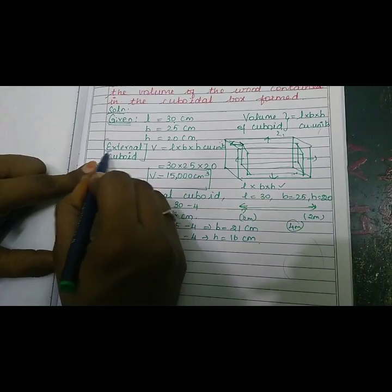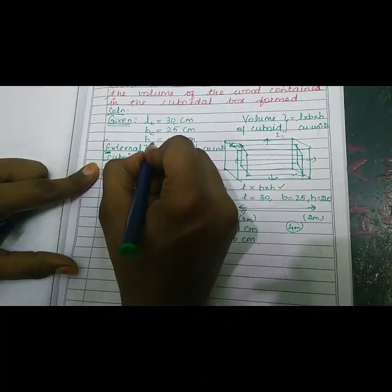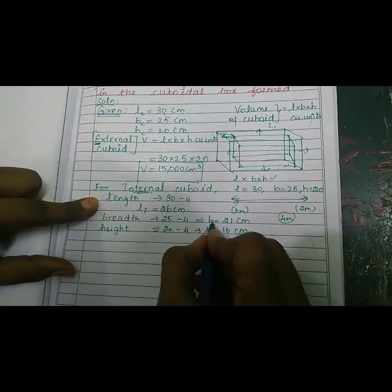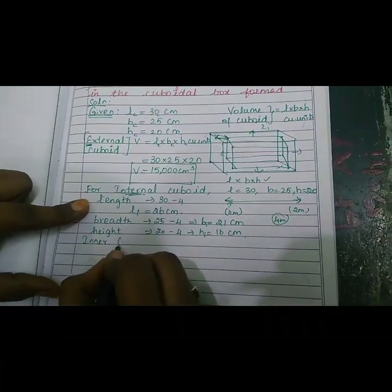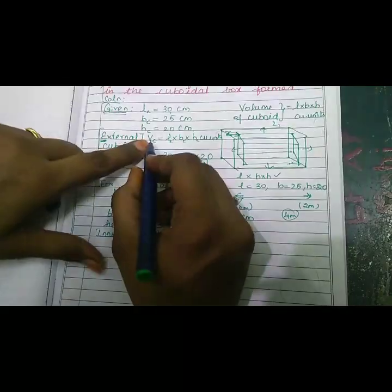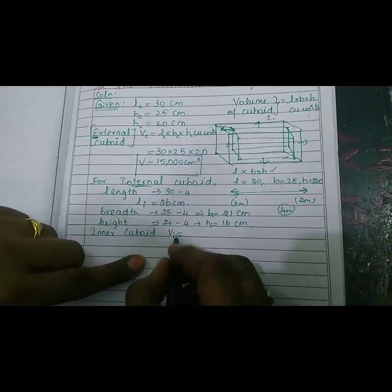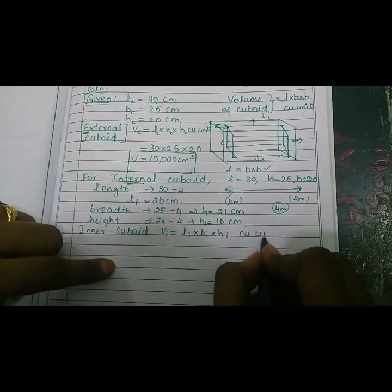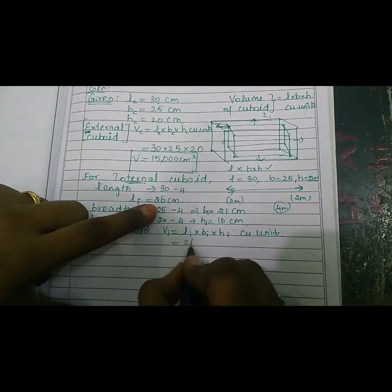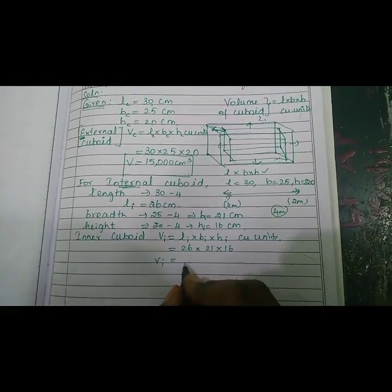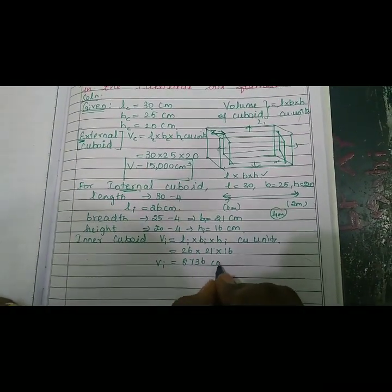We have external cuboid L, B, H and internal cuboid Li, Bi, Hi. Now internal cuboid volume: V_i equals Li into Bi into Hi. L value is 26, B value is 21, height value is 16. The answer is 8,736 cubic cm³.